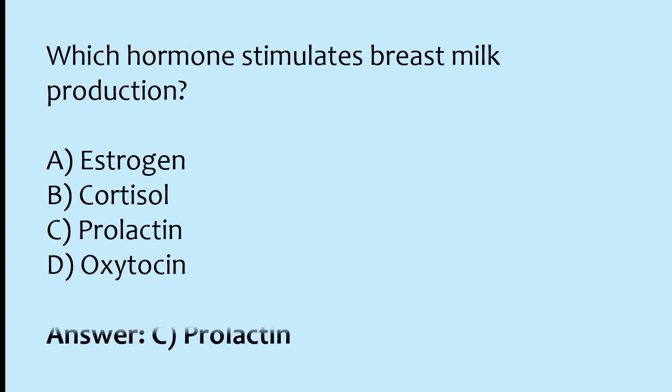Which hormone stimulates breast milk production? Options: estrogen, cortisol, prolactin, oxytocin. The correct answer is option C: prolactin hormone stimulates breast milk production.